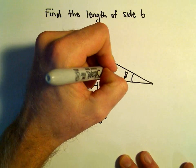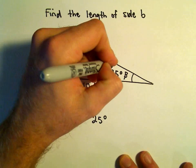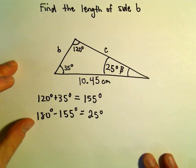So our angle beta must be 25 degrees down here, and now we can simply just use our law of sines.